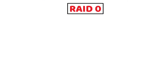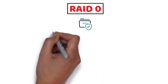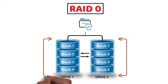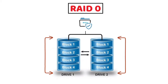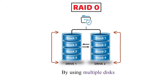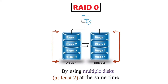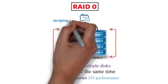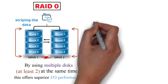In a RAID 0 system, data is split up into blocks and then gets written across all of the drives in the array. By using multiple disks — at least two — at the same time, this offers superior I/O performance. It involves taking two or more drives and striping the data across them.